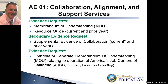The next evidence request under secondary evidence requests reads Supplemental Evidence of Collaboration. In the event an agency is having trouble meeting minimum compliance — for example, if an agency doesn't have an MOU or a resource guide available — the reviewer may ask for supplemental evidence to help meet minimum compliance. Examples of supplemental evidence could be recent meeting agendas, sign-in sheets, or meeting minutes. However, only upload these documents if asked by your reviewer.